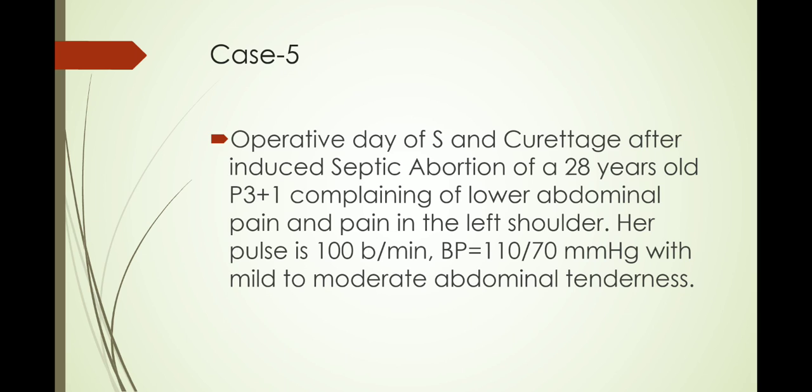Case number five: operative day of suction and curettage after induced abortion in a 28-year-old para 3+1, complaining of lower abdominal pain and pain in the left shoulder. Her pulse is 100 beats per minute, BP is 110/70, with mild to moderate abdominal tenderness. Pain in the shoulder and abdominal tenderness are a little bit alarming signs.